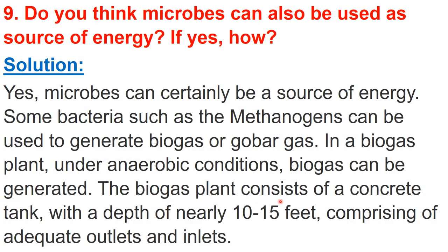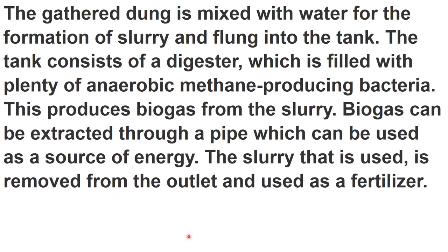The biogas plant consists of a concrete tank with a depth of nearly 10 to 15 feet, comprising adequate outlets and inlets — outlets for removal of the biogas and inlets for the addition of slurry. The gathered cattle dung, in which methanogens are present, is mixed with water for the formation of slurry and flung into the tank.